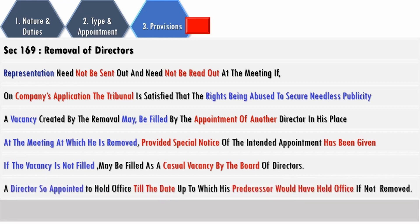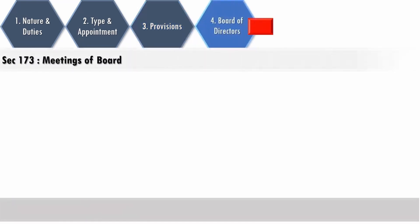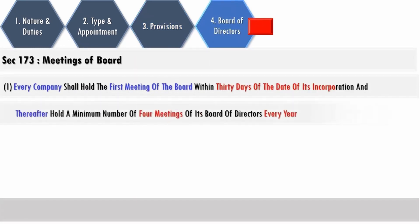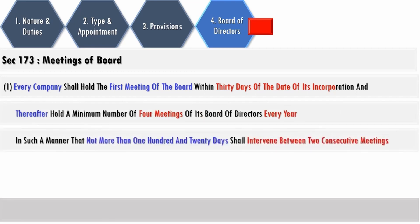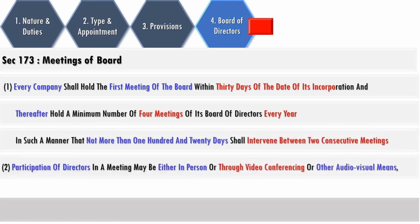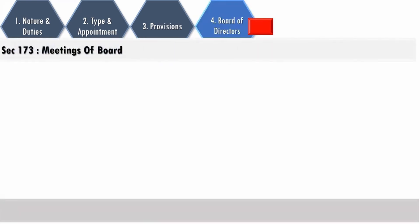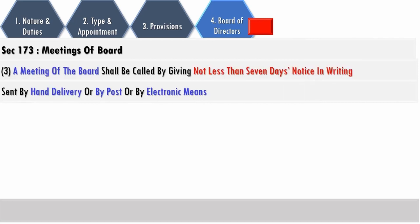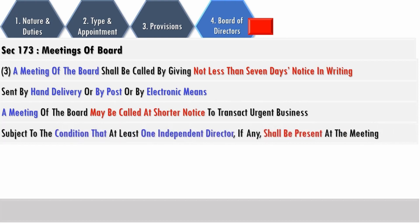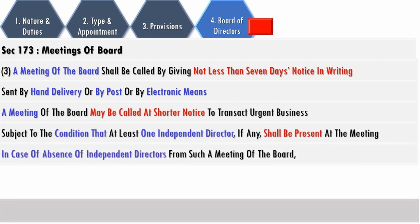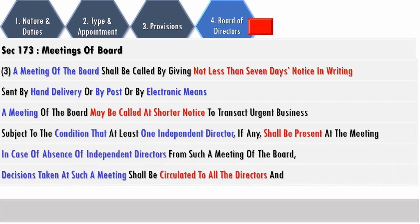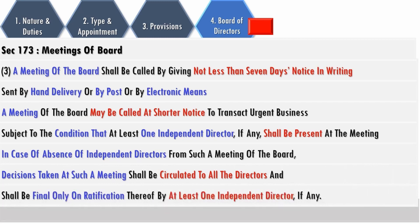Section 173 deals with meetings of the board: the first meeting of the board is to be held within 30 days of incorporation; thereafter, four meetings to be held every year, with a gap between two board meetings of not more than 120 days. Participation of directors in a board meeting may be either in person or through video conferencing or other audio-visual means, with recording and storing of proceedings done along with date and time. A meeting of the board can be called by giving a clear notice of seven days in writing, sent by hand delivery, post, or electronic means. A meeting may be called at a shorter notice provided at least one independent director is present. In case of absence of independent directors from such a meeting, the decisions shall be circulated to all directors and shall be final only on ratification by at least one independent director.